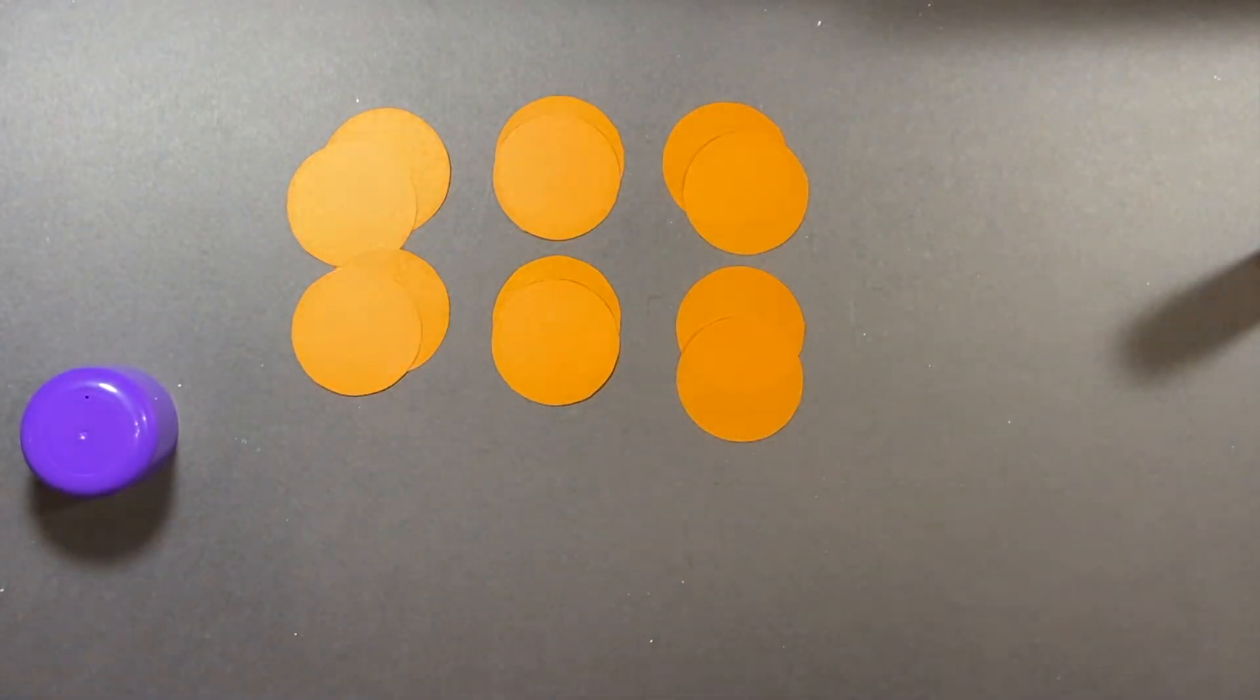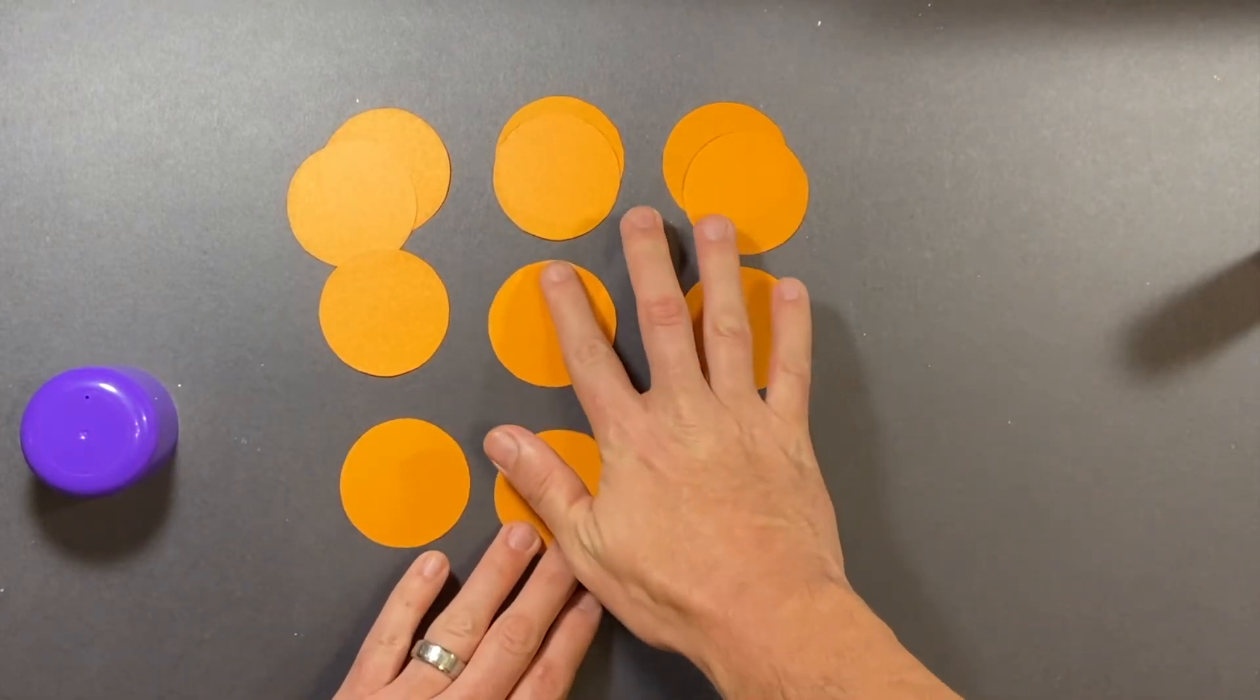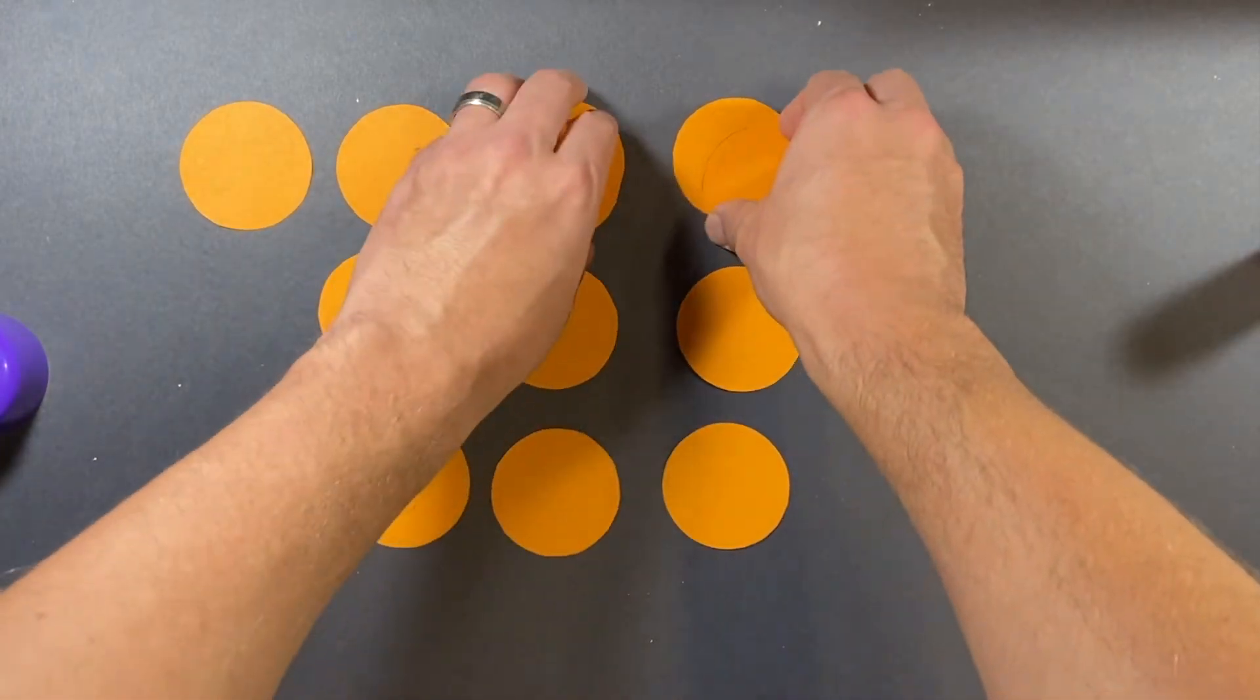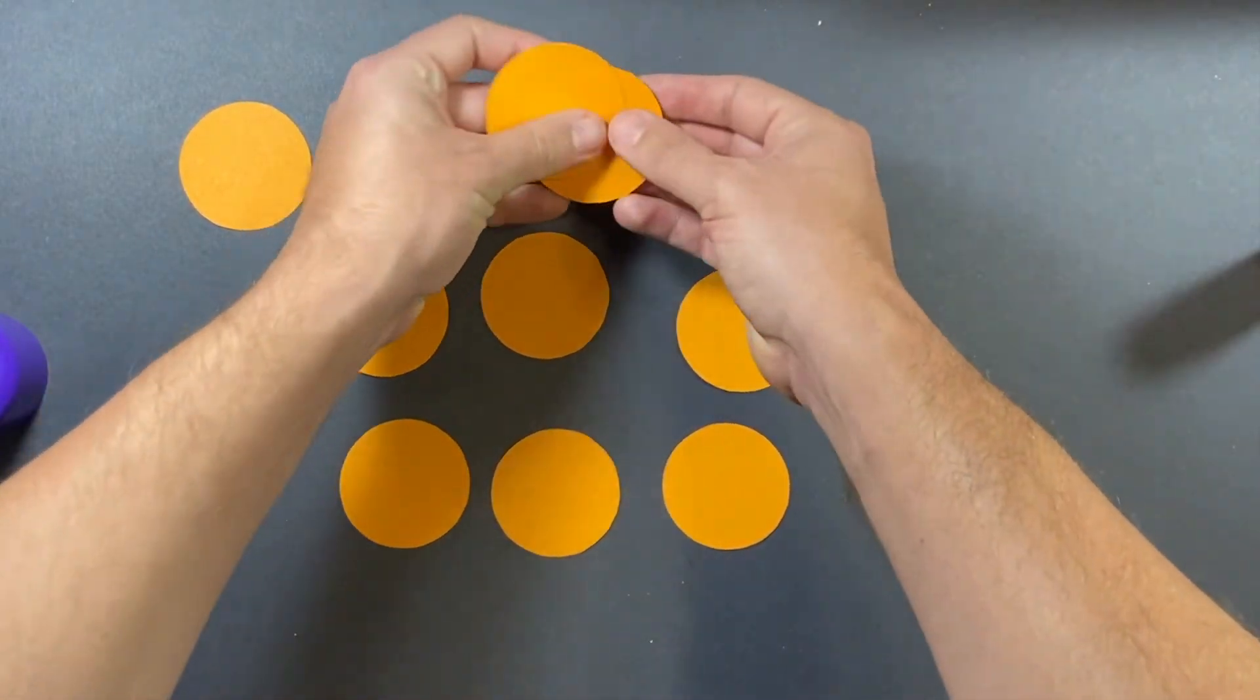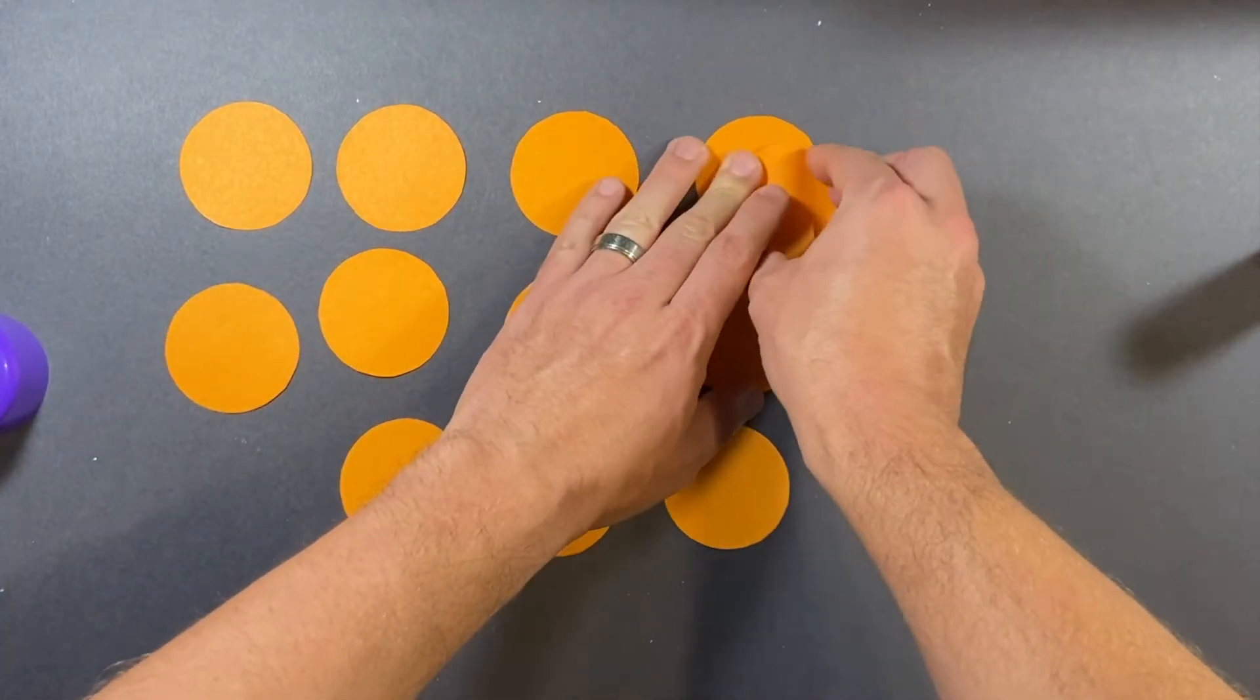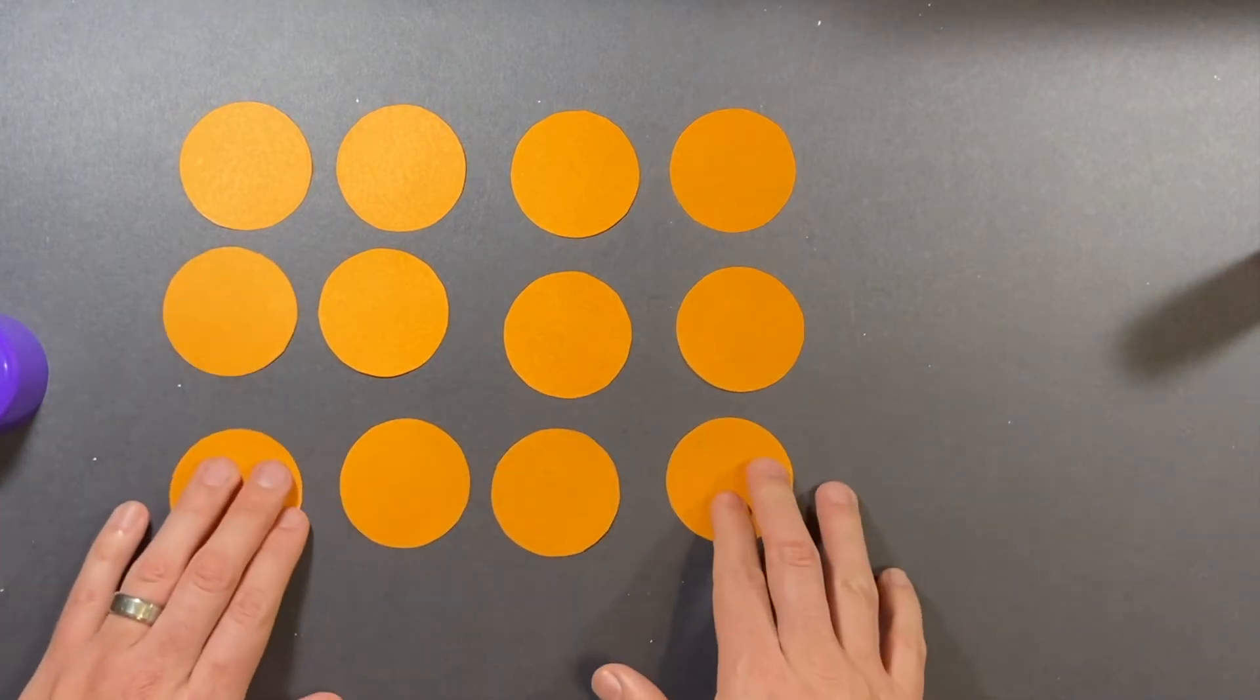Remember, if you guessed ten, sorry, I know I tricked you. Ten is incorrect. That is not the number of circles we will have. But if you did it correctly and you only folded the paper just one time, spread out all the circles. And you will see that we ended up with twelve circles. What?